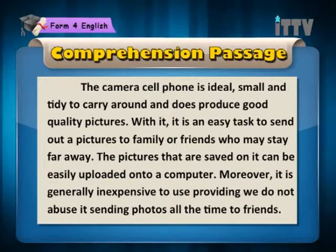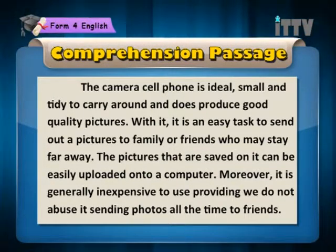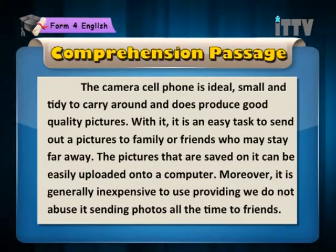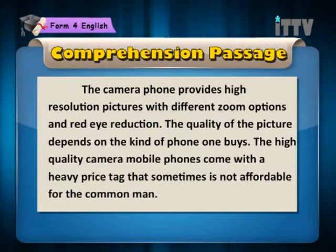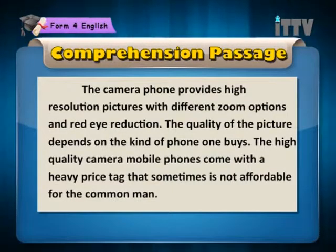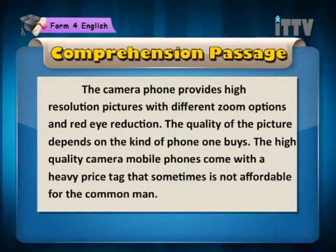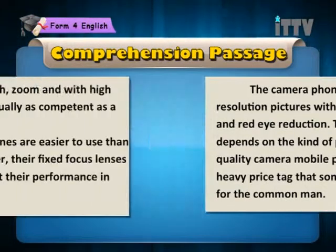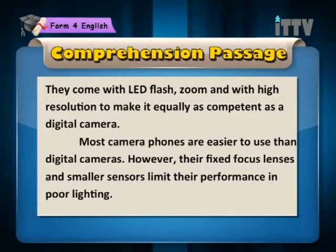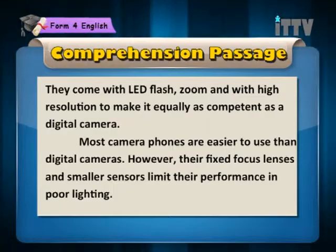Moreover, it is generally inexpensive to use, providing we do not abuse it by sending photos all the time to friends. The camera phone provides high-resolution pictures with different zoom options and red-eye reduction. The quality of the picture depends on the kind of phone one buys. The high-quality camera mobile phones come with a heavy price tag that sometimes is not affordable for the common man. They come with LED flash, zoom and high resolution to make it equally as competent as a digital camera.